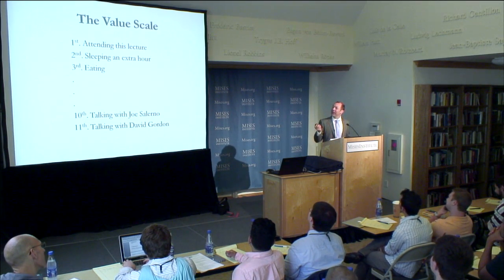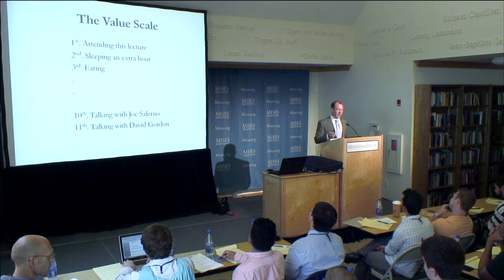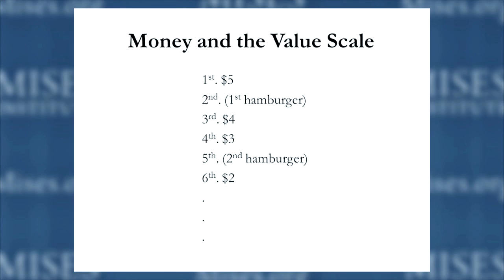We don't just have to have actions or activities on our value scale — we can put all sorts of economic goods on it, such as money. Rothbard in Man, Economy, and State uses notation where a hamburger in parenthesis is something you don't have — something you can imagine having and can place on your value scale relative to the things you do have, which in this case are money, since those are not in parenthesis.